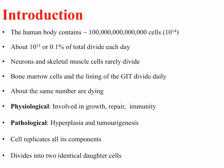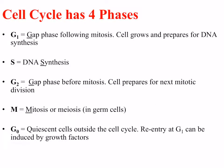During cell division, a cell replicates all of its components and divides into two identical daughter cells. The cell cycle is thought to have four distinct phases: G1, S, G2, and M phases. There's also another phase called G0, which is considered to be outside of the cell cycle.